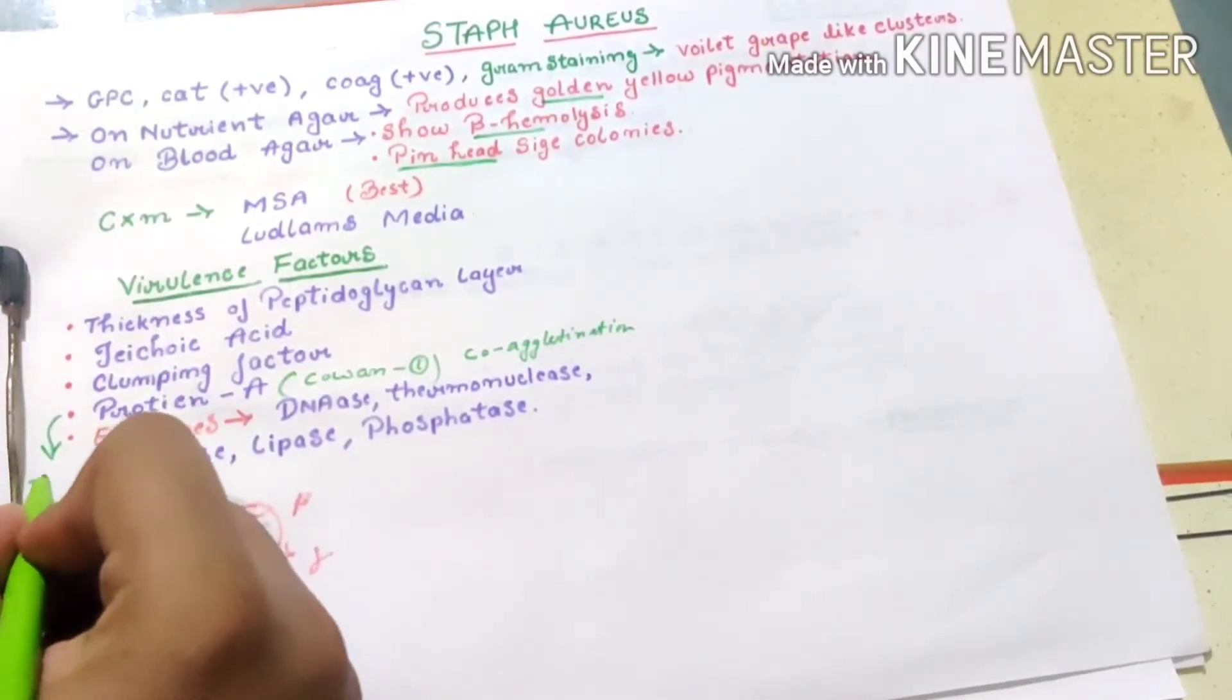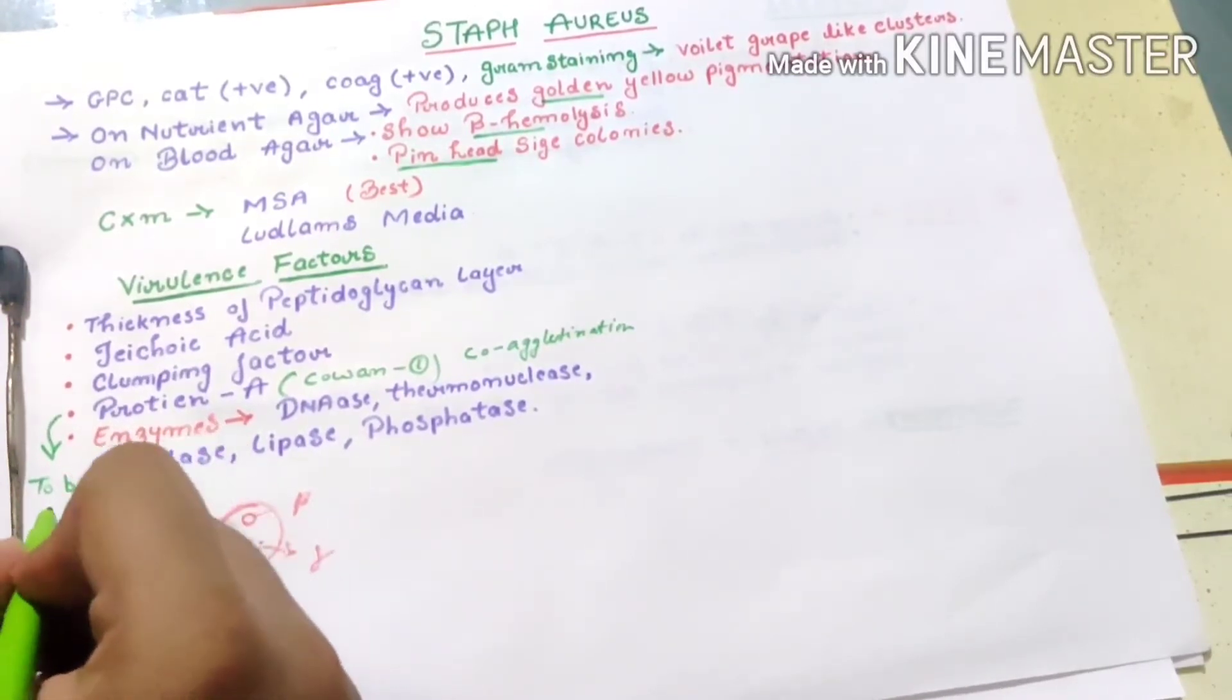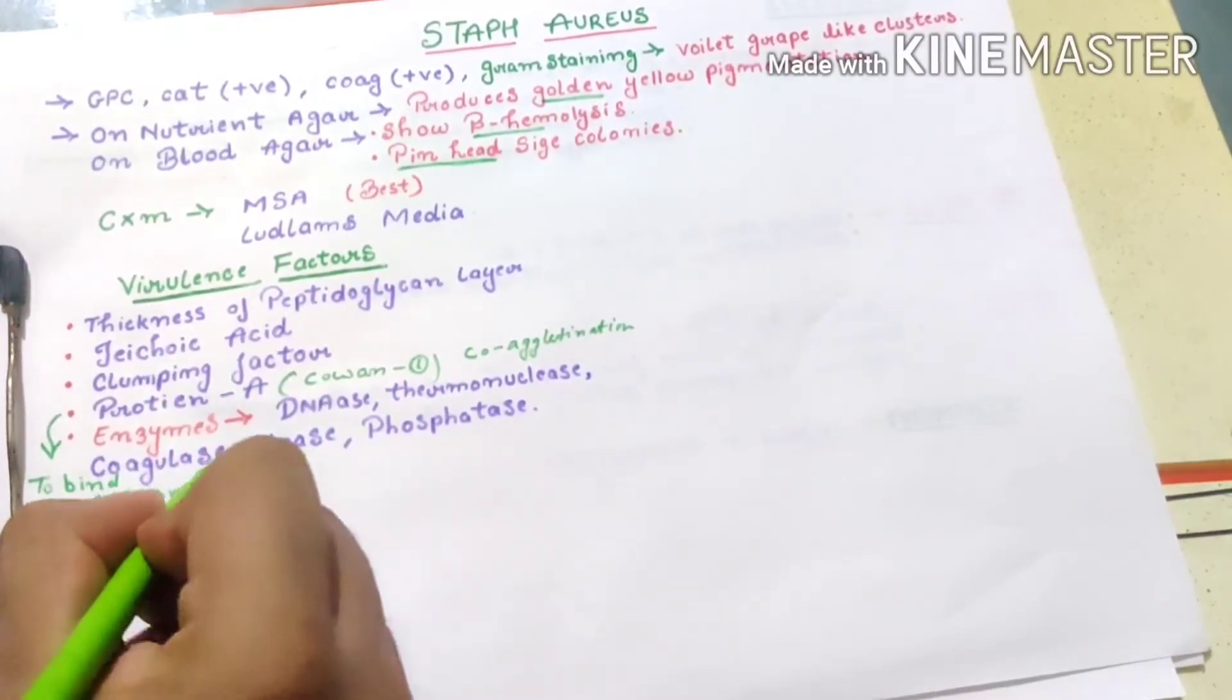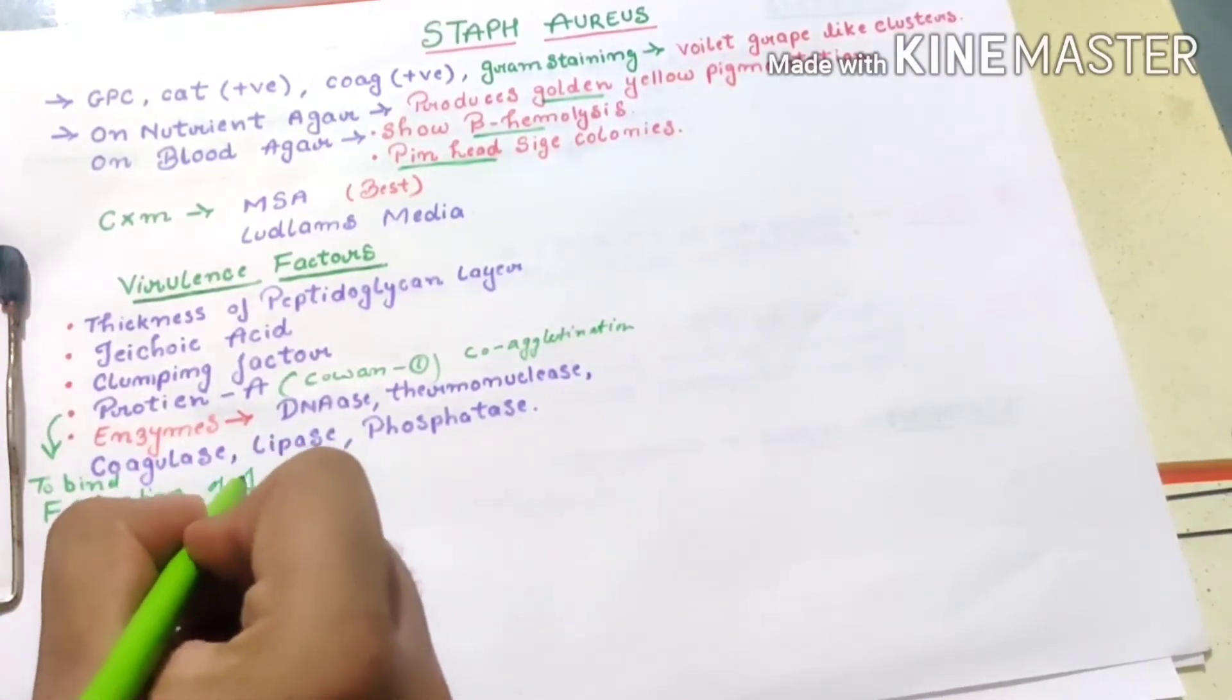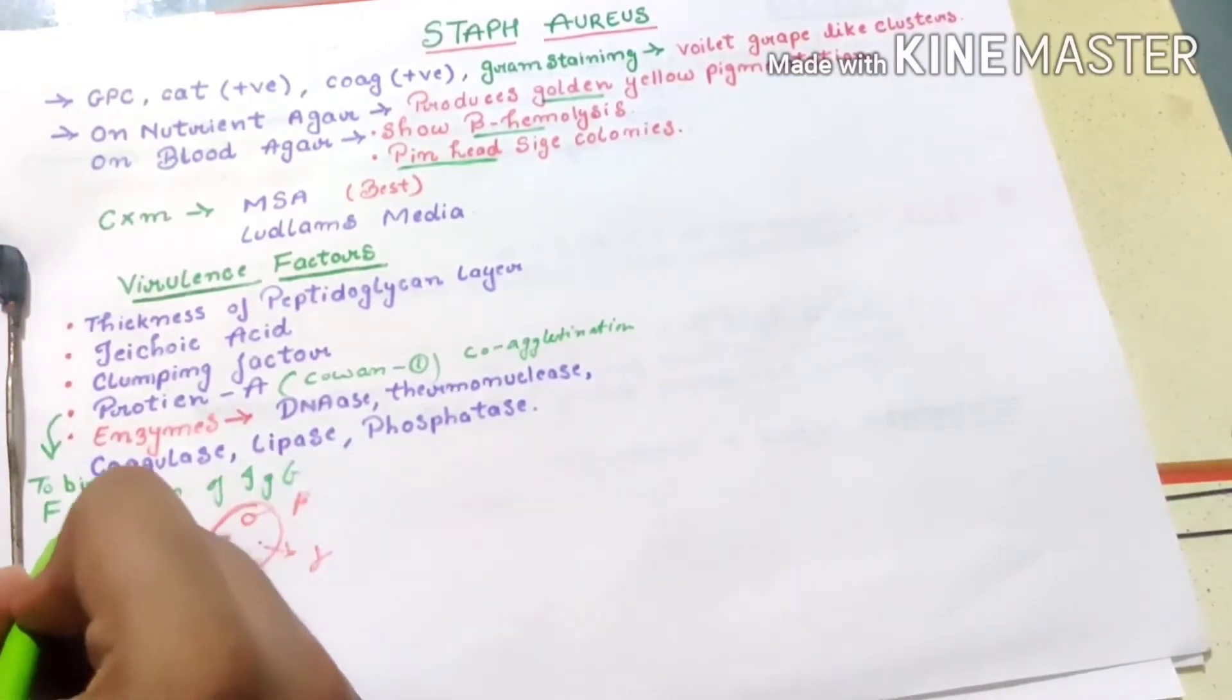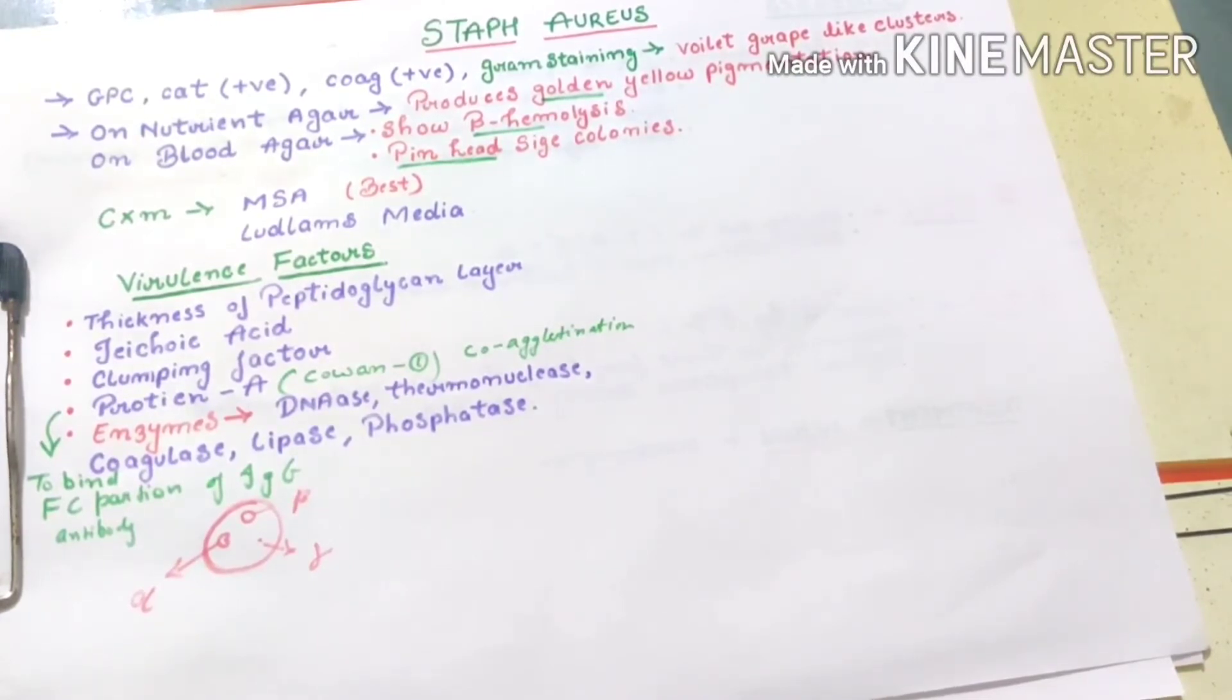It has the special property to bind the Fc portion of IgG antibody. So one of the factors is this protein A, which is not found in all strains of Staph aureus.